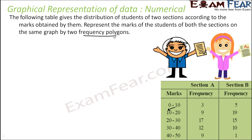There are two ways of creating frequency polygons. One is to create the histogram and join the midpoints, or the easier way is to find the midpoint directly. For this, the midpoints will be: 0 plus 10 by 2 is 5, 10 plus 20 by 2 is 15, 20 plus 30 by 2 is 25, 30 plus 40 by 2 is 35, and 40 plus 50 by 2 is 45. So we got the midpoints of the class.